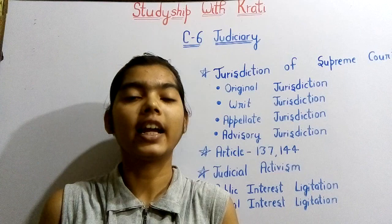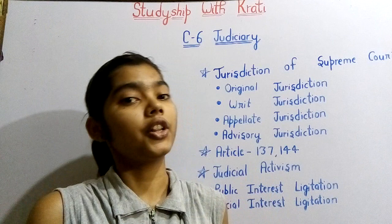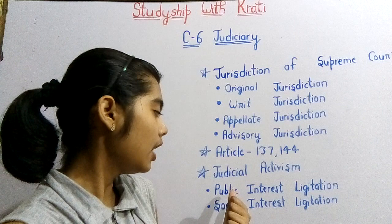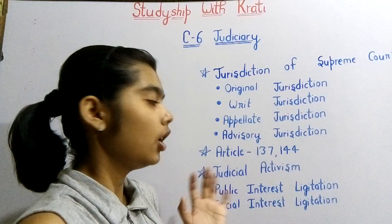Toh 1979 ke baad yeh rule bana ki jiska bhi right violet hua hai uski taraf se bhi koi aur appeal kar sakta hai — isse kai sare logon ko justice mila. Usko yeh naam diya — Public Interest Litigation. Isse public interest litigation hua — yani logon ka fayda hua. Saath hi Social Interest Litigation bhi dekhiye.